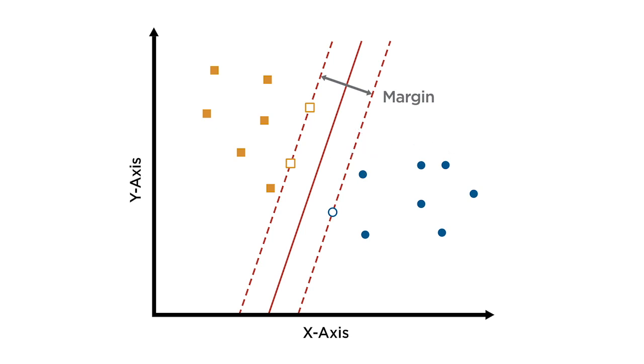Thus, the SVM algorithm tries to find a decision boundary in such a way that the separation between the two classes is as wide as possible. In this two-dimensional case, that decision boundary corresponds to a line, but this boundary is generally known as a hyperplane, which is applicable in higher dimensions.